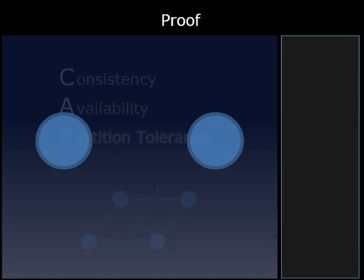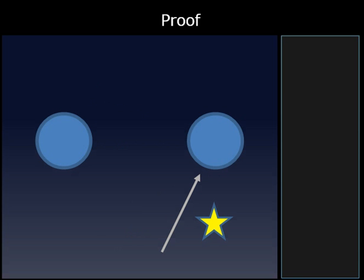And the proof is actually pretty simple. Suppose I've got a trivial distributed system, just two nodes. If I were to write to one node, and then read from another node, what would happen? Furthermore, let's suppose that the messages can't get from one node to the other.